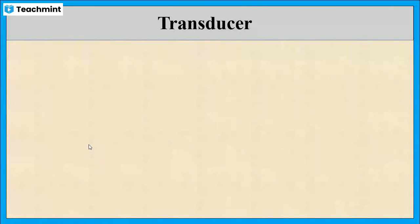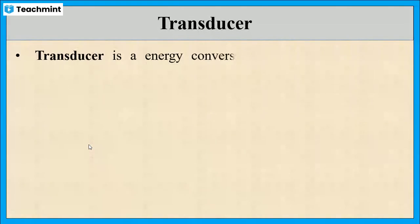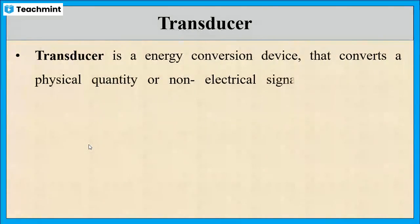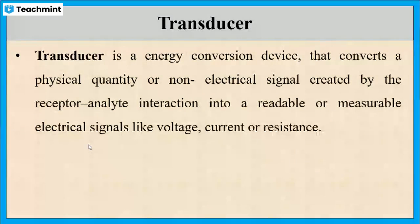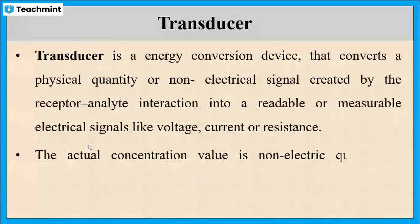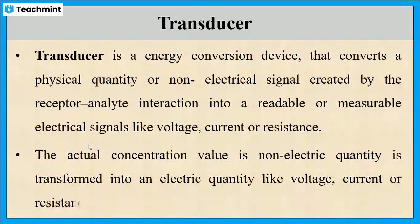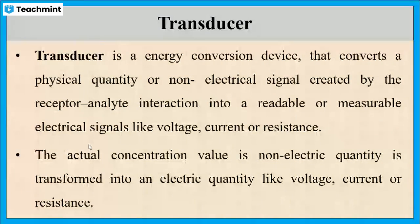The signal produced in the receptor is transferred to the transducer, which is an energy conversion device that converts the physical quantity of the signal into a readable electrical signal like voltage, current, or resistance. For example, in a pH meter, the hydrogen ion concentration is detected by the glass electrode, which acts as the receptor, while the pH meter converts the hydrogen ion concentration into a pH value, acting as the transducer.